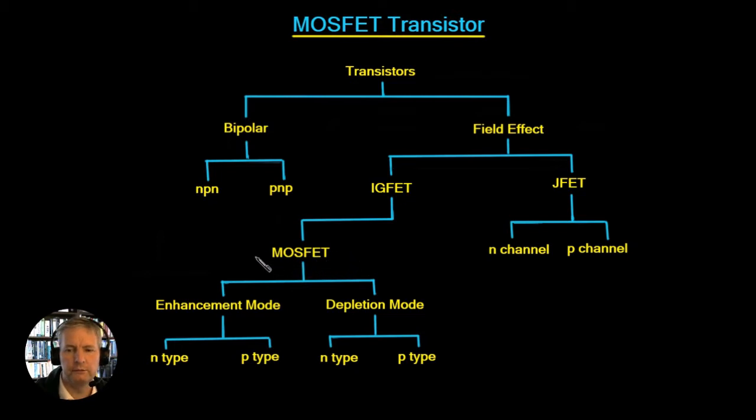Now this can be split into two broad types, the Enhancement Mode and the Depletion Mode. The Enhancement Mode is going to have an N type and a P type and the Depletion Mode is going to have an N type and a P type. So throughout the rest of this course we're really interested in this little section here and this is going to be our transistor type that we're going to talk about.